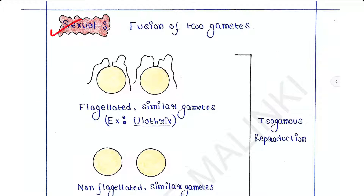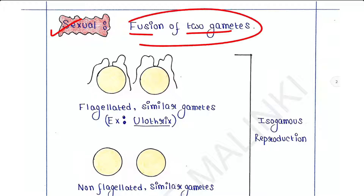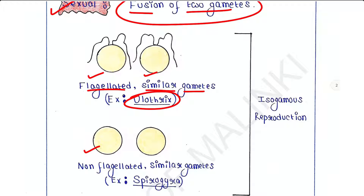Now we will talk about sexual reproduction. Sexual reproduction takes place through the fusion of two gametes. In the first type, the two gametes are similar in size, shape, and morphology. Both are flagellated — this type is seen in Ulothrix. Another example is Spirogyra, where both gametes are similar but have no flagella.